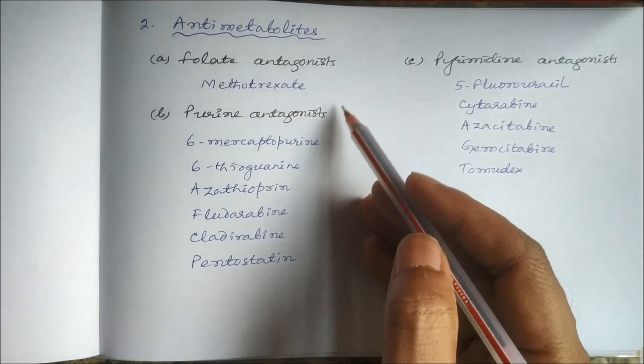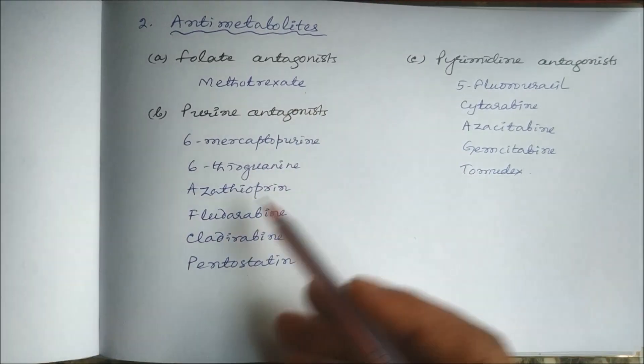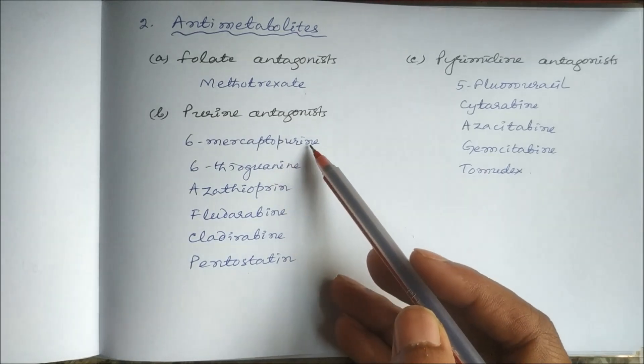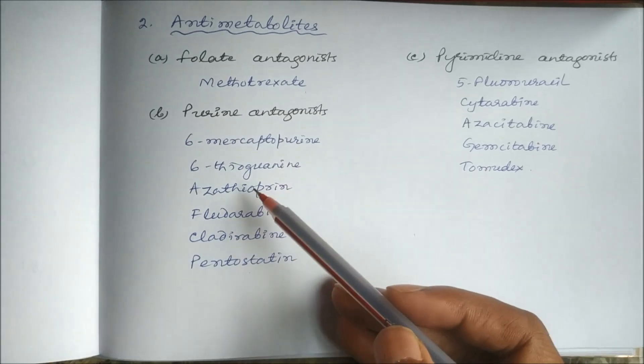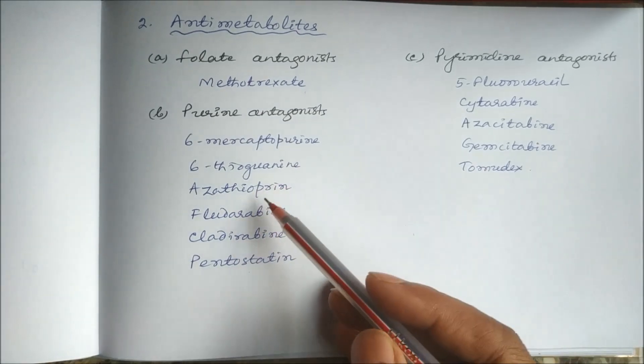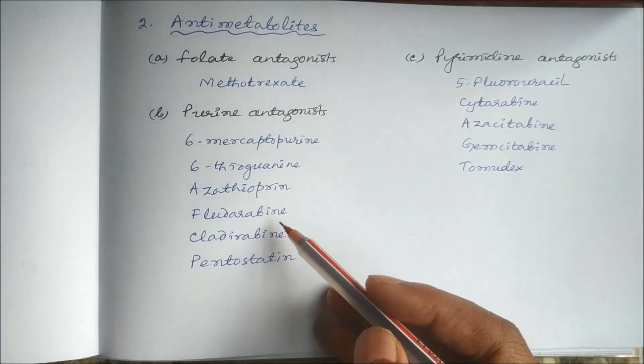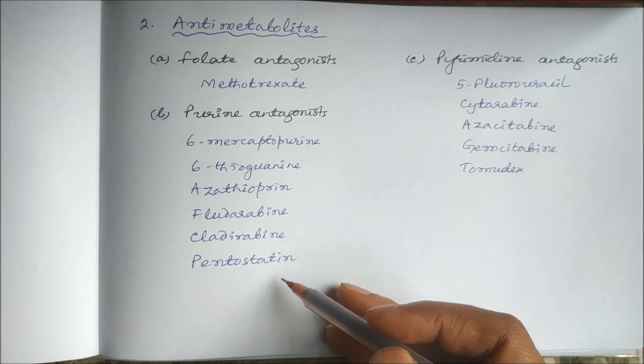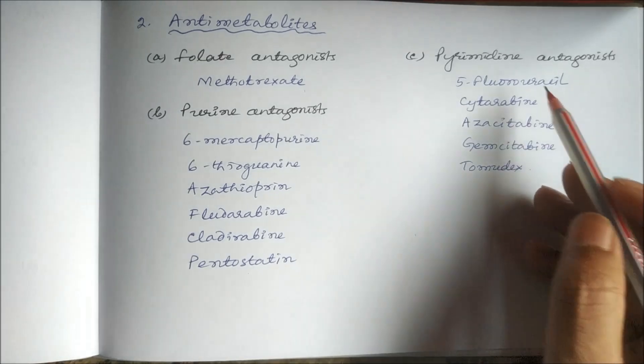Purine analogues include 6-mercaptopurine, 6-thioguanine, azathioprine, fludarabine, cladribine, and pentostatin.